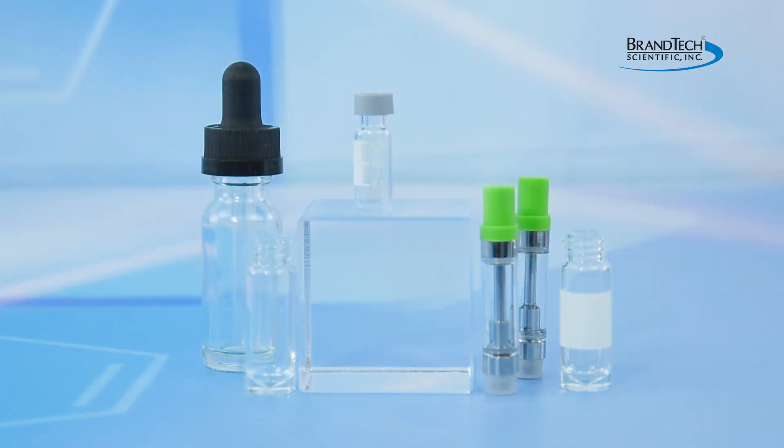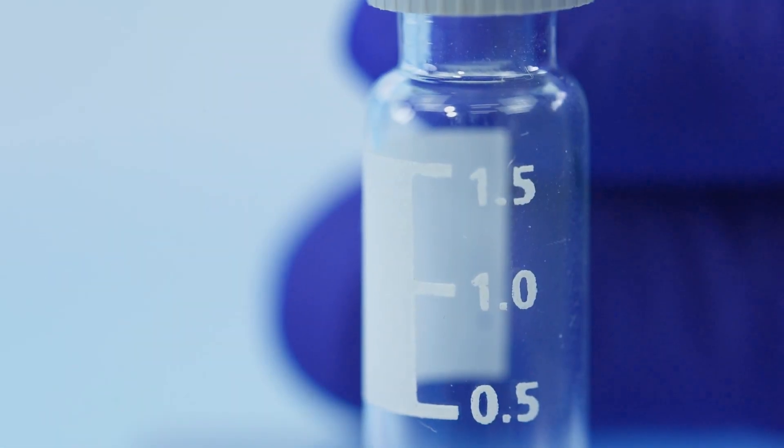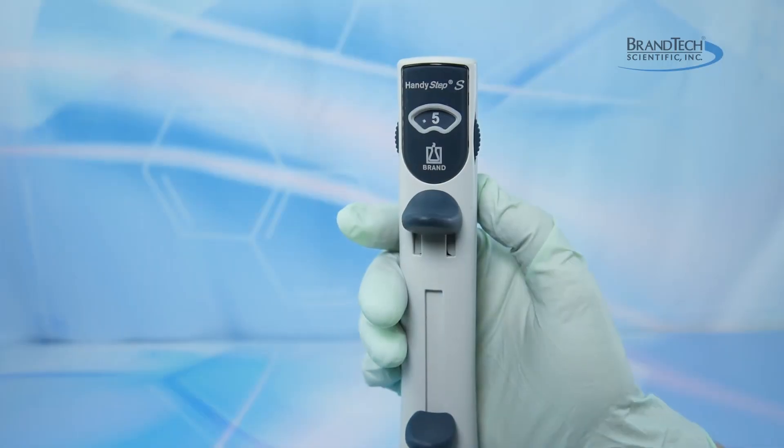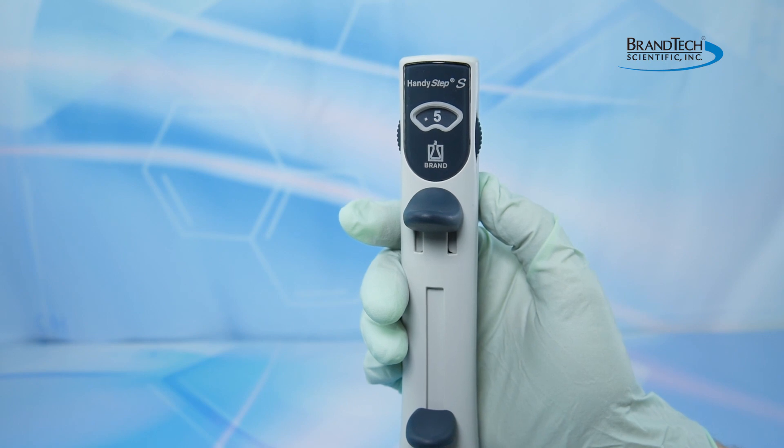Prior to filling your vials or cartridges, you should confirm that the volume held by the container is less than or equal to the volume set on your HandyStep S. Failure to do so can result in spillage.